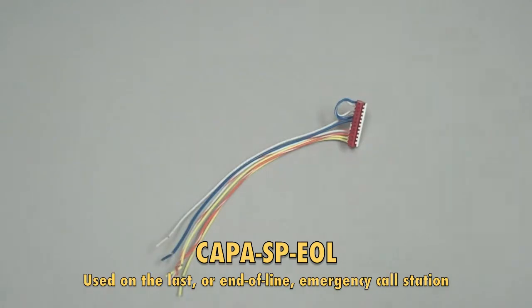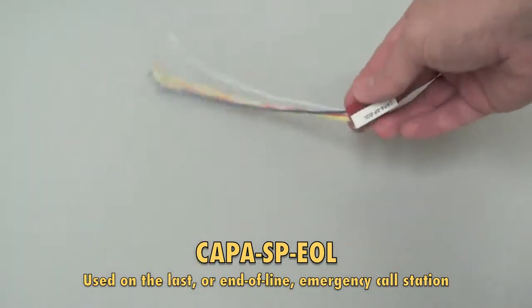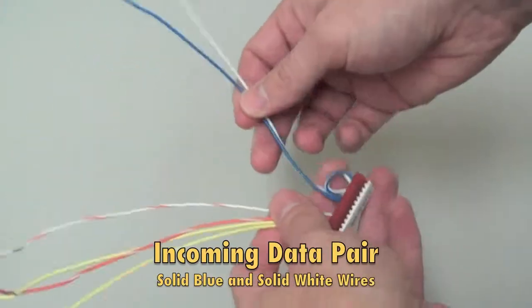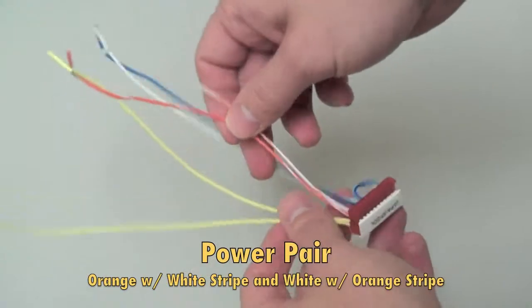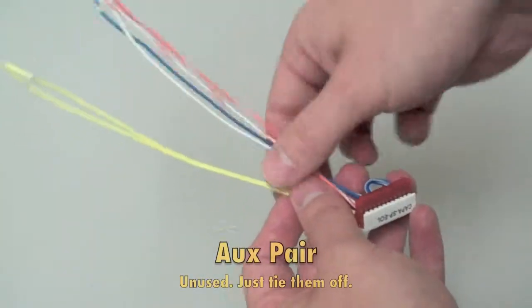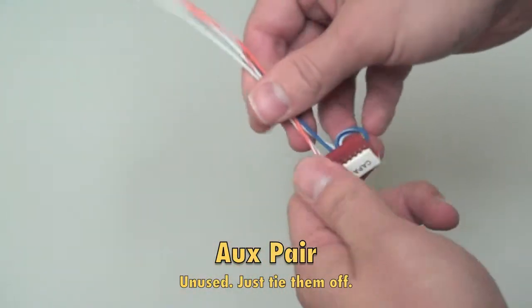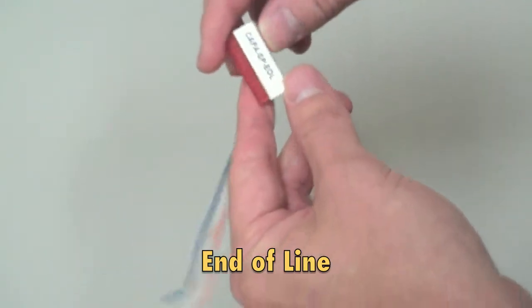This pigtail is your end-of-line adapter, Kappa SP-EOL. It also has on it a solid white and solid blue line for your incoming data pair, and another white with an orange stripe and an orange with a white stripe for your incoming power pair. Once again, the aux pair, probably not used, but it might be a dome light. This right here kind of indicates the end-of-line loops back on itself.